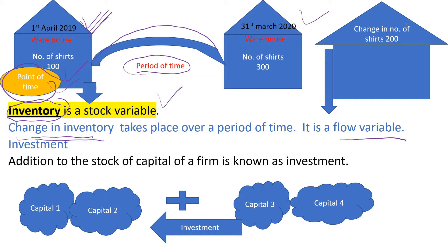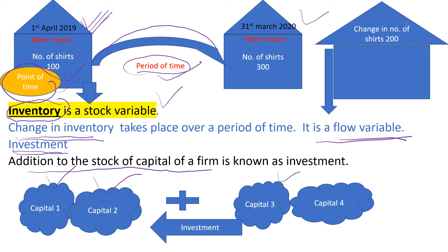So 1st April 2019 to 31st March 2020 is the financial year for India. As it is measured over a period of time, we call change in inventory a flow variable. Investment is nothing but an addition to the stock of capital for a firm. If a firm already has two machines and buys a third and fourth machine, those added machines we call investment.